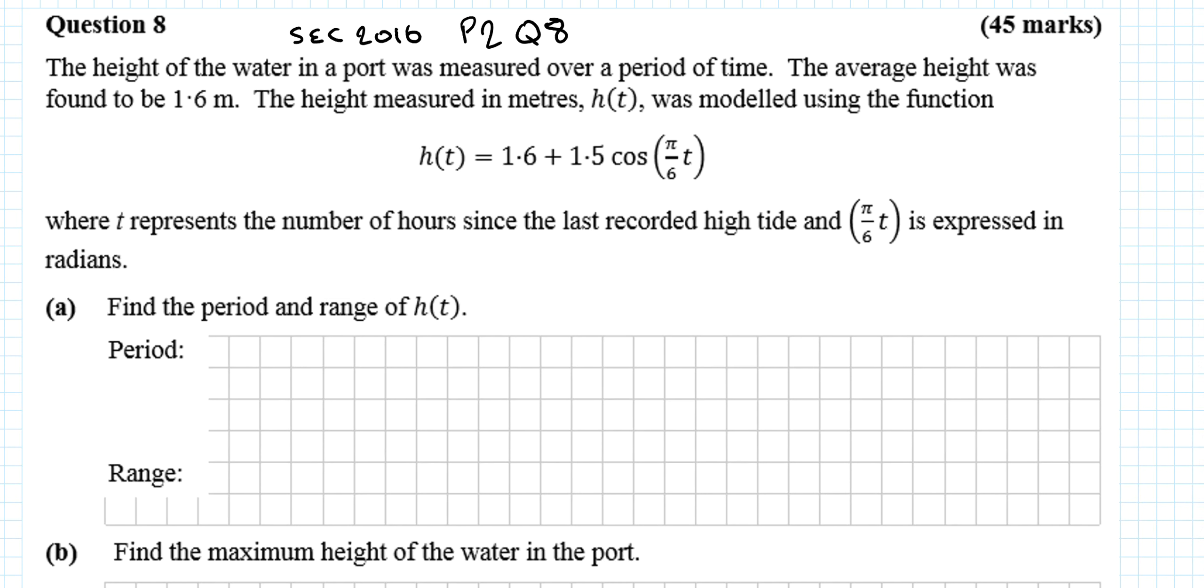The height of water in a port was measured over a period of time. The average height was found to be 1.6 meters, so that's going to be the midway line. Before we actually answer the questions, it is good to try and visualize the question. This is going to be a height of 1.6, the height measured in meters h(t).